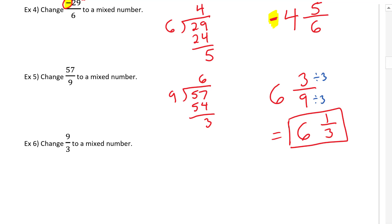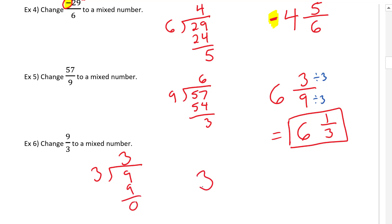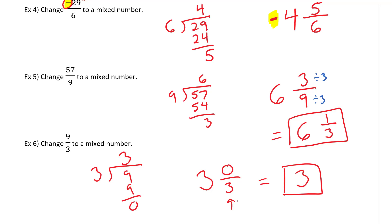Change nine over three into a mixed number. Three divided into nine — how many times does three go into nine? Three times, remainder zero. So our whole number is three, the denominator was three, the remainder is zero. We can just write this as three — there's no need to write the fraction.